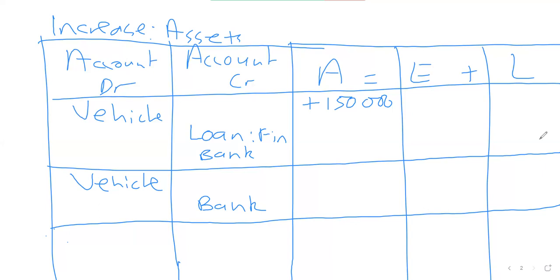The moment you see a plus on the liability column, it means you have received credit from a third party. The moment you see a minus on the liability column, it means you are repaying that credit back. So a plus on the liability column means you obtained credit from the bank or a creditor. That's the only time you see a plus on the liability column — whenever you receive credit.